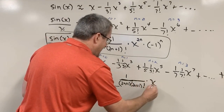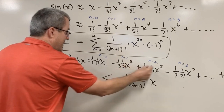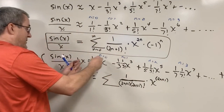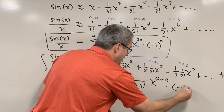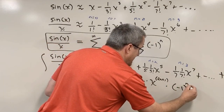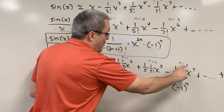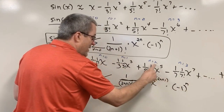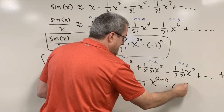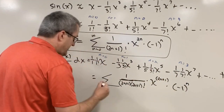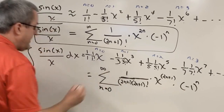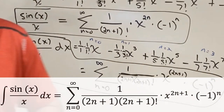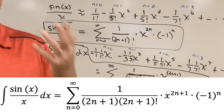That gets multiplied by X to a power, and notice the power matches the three, three, five, five, seven, seven pattern — so the power is two N plus one. We also have alternating plus minus plus minus, so we include negative one to the N. When N equals three, negative one cubed is negative one — correct. When N is two, negative one squared is positive one — correct. N goes from zero to infinity. We now have a way to express the integral of sine X over X as an infinite Taylor series.